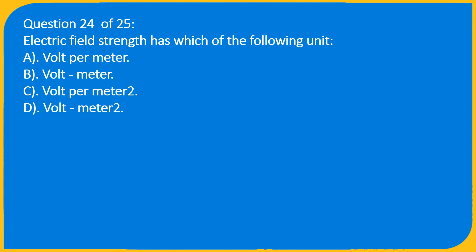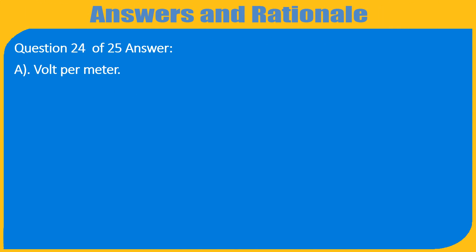Question 24 of 25: Electric field strength has which of the following unit? A. Volt per meter, B. Volt·meter, C. Volt per meter², D. Volt·meter². Answer: A. Volt per meter.